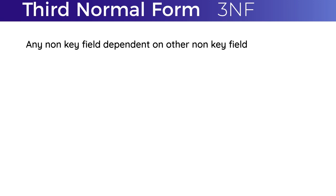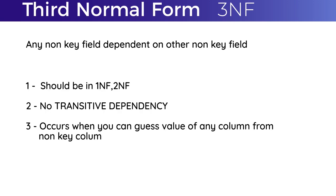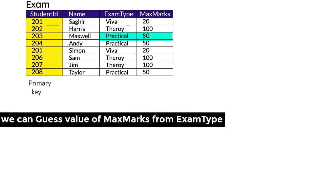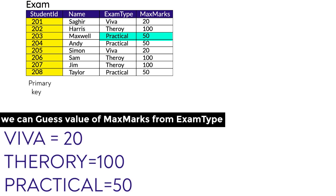For a table to be in Third Normal Form, it must already be in First Normal Form and Second Normal Form. Third Normal Form should not have transitive dependency. If one non-key column can be guessed from another non-key column, it violates Third Normal Form. In this table, student ID is the primary key, and name, exam type, and maximum marks are non-key columns. We can guess that if a student opts for viva, maximum marks will be 20; theory will be 100 marks; and practical will be 50 marks. Maximum marks is transitively depending on exam type.